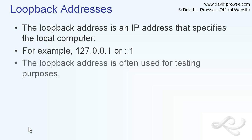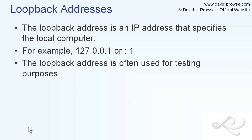Now, there are several reasons to utilize the loopback address. For example, the loopback address could be used for testing purposes. By pinging the loopback, you can discern whether the TCP IP protocol is working properly, without connecting to another computer on the network, and without generating network traffic.